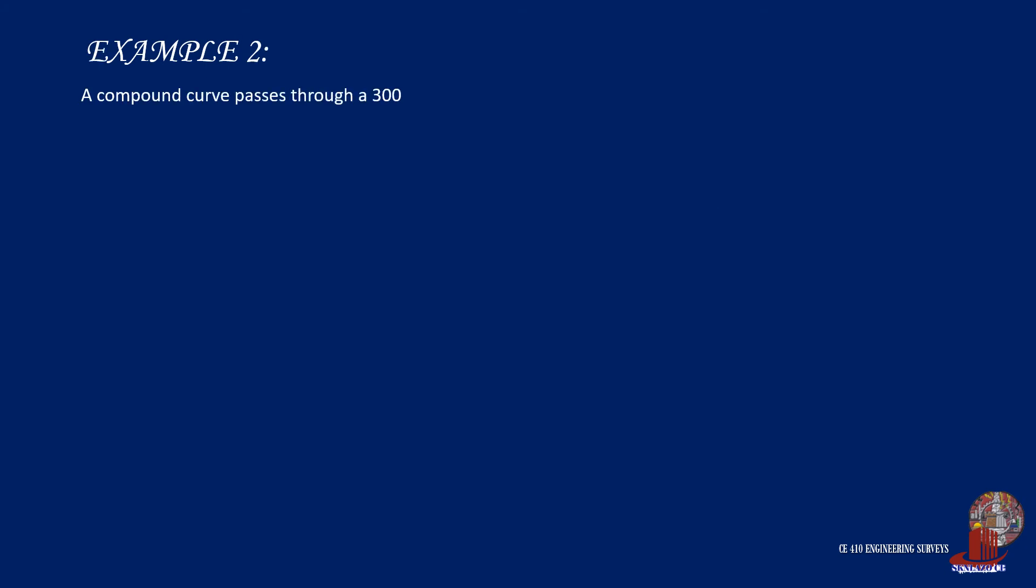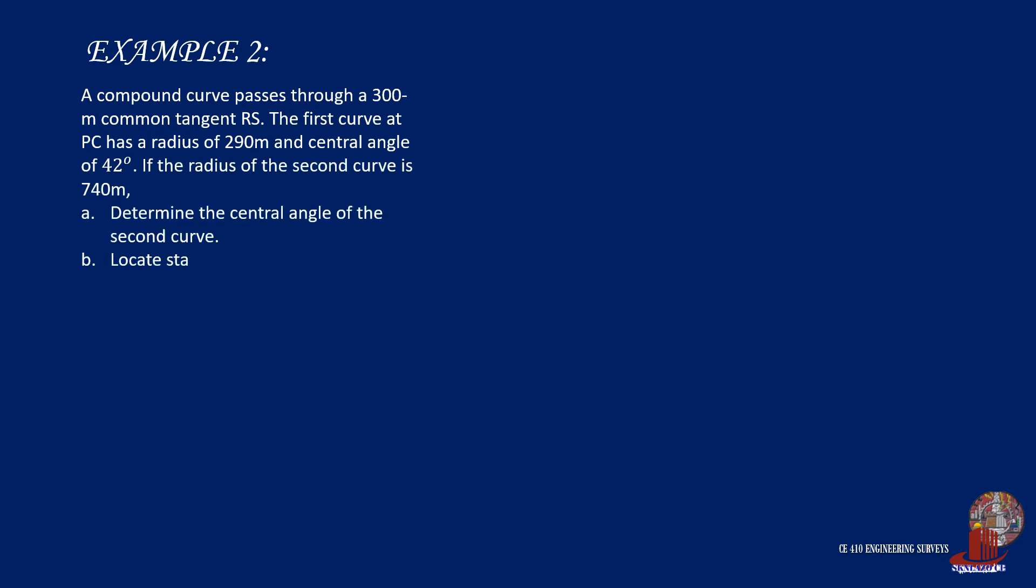Example number 2. A compound curve passes through a 300 meter common tangent RS. The first curve at PC has a radius of 290 meters and central angle of 42 degrees. If the radius of the second curve is 740 meters,